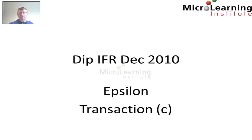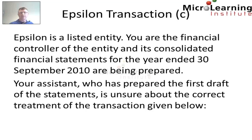We're looking at the Diploma in IFR, specifically transaction C from question Epsilon. In this question, we're told that Epsilon is a listed entity and that you are the financial controller of the entity. Its consolidated financial statements for the year ended the 30th of September 2010 are being prepared. Your assistant, who has prepared the first draft of the statements, is unsure about the correct treatment of the transaction given below.